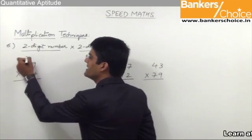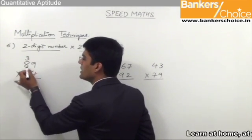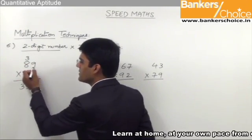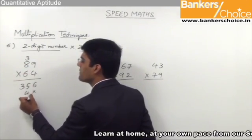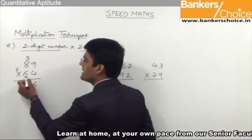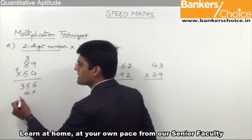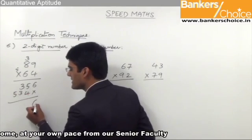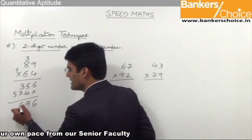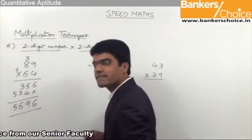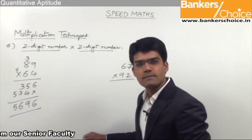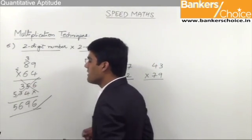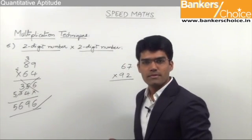For example: 4 into 9 is 36. Then 4 into 8 — 32 plus 3 is 35. Then 6 into 9 is 54, with 5 carried forward. And 6 into 8 is 48; 48 plus 5 is 53. So the final answer here would be 6, 5 plus 4 is 9, 6 and 5 — that is 5696. The answer is correct, but the method is lengthy because it involves a lot of steps.